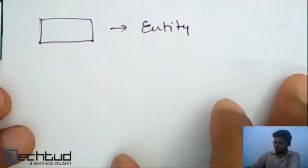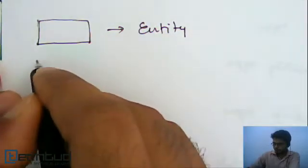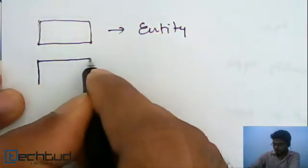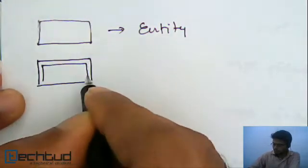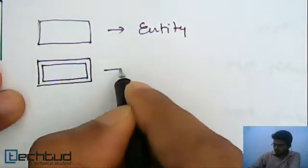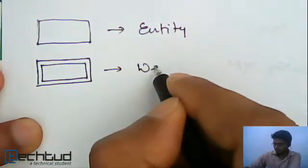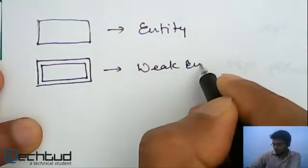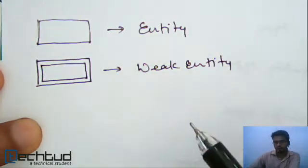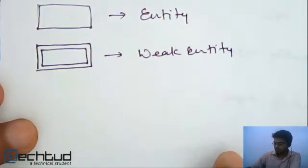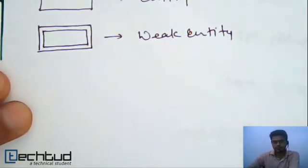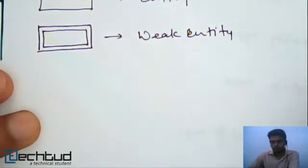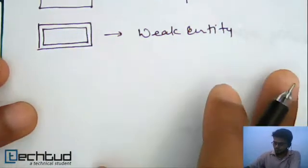The next one is another kind of entity which is represented by double rectangle. Okay. So, this is weak entity. Entity. Well, I know this is a new term for you. We have a separate lecture on this weak entity. So, we will be covering what it is. Just remember the symbol for now. Okay.